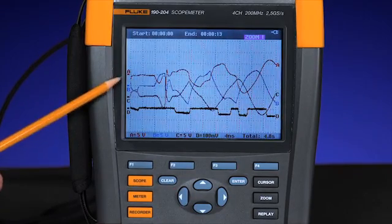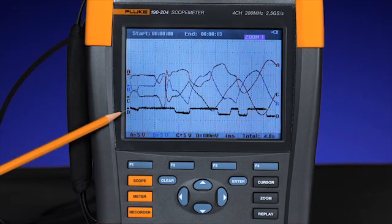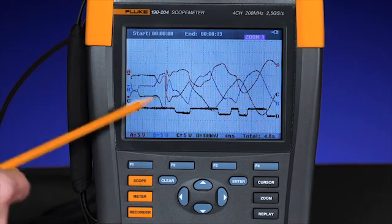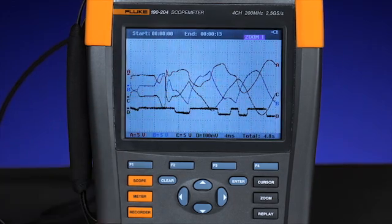You can see the voltage on input A, B, and C, and then the current coming for D as it's starting to build up into the sine wave.